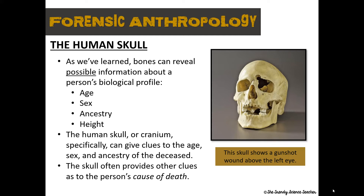We're going to talk about how anthropologists can use these clues to determine possible sex, ancestry, and age of the deceased. The skull can often provide other clues as to a person's cause of death. For example, a fracture to the upper eye orbital is indicative of a gunshot wound. Not only would this skull give clues about sex, ancestry, or how a person lived, but also perhaps their cause of death. It's important to note that these are only clues — not set in stone — but the goal is to determine who died, how they died, and how long ago.